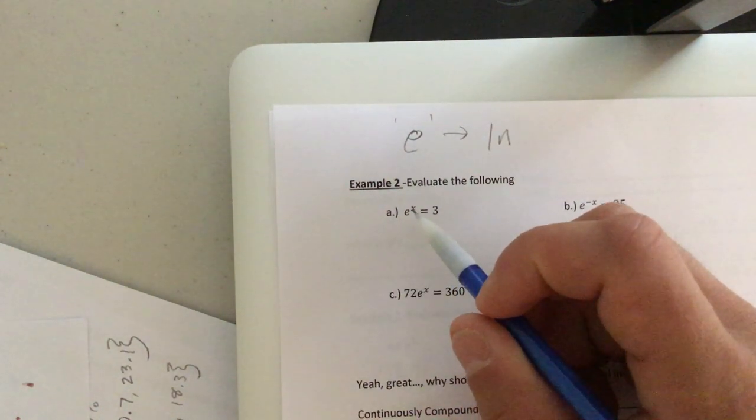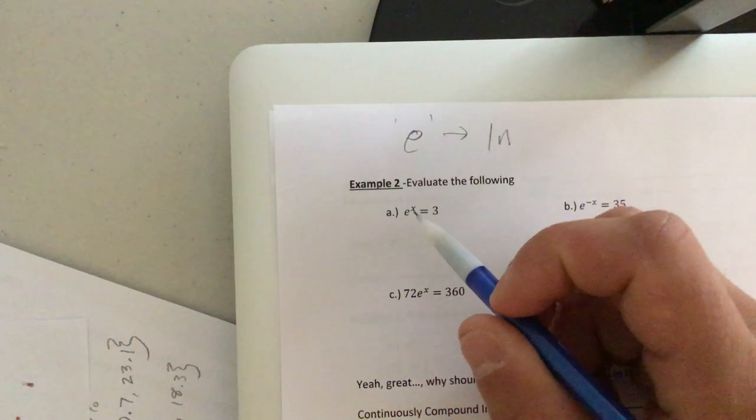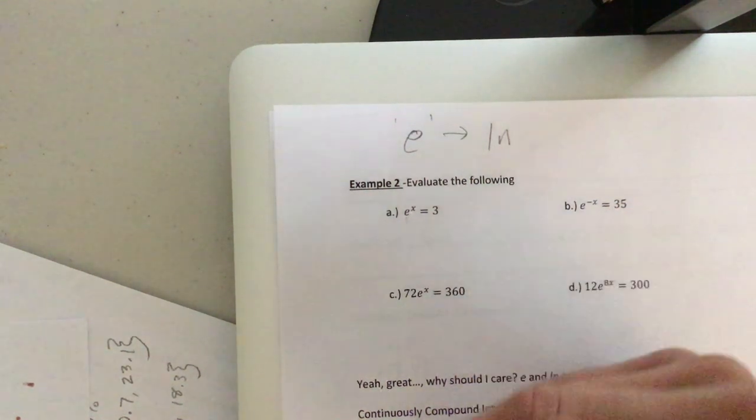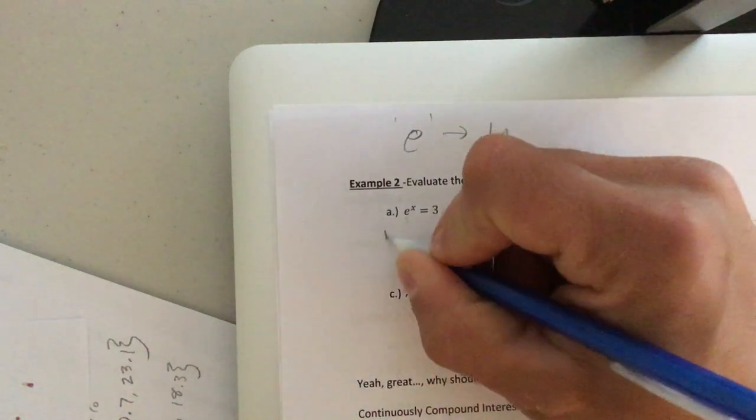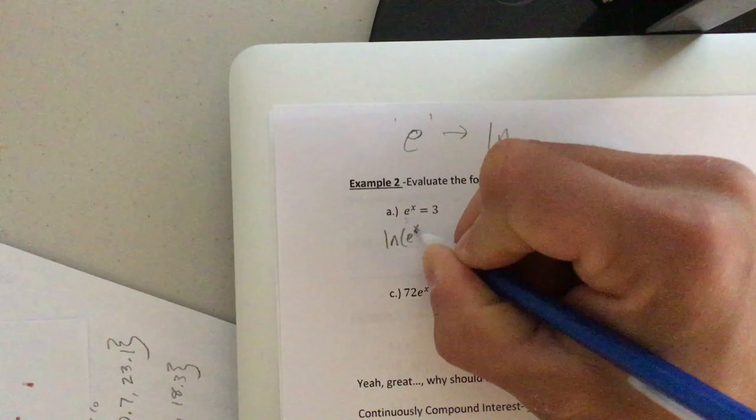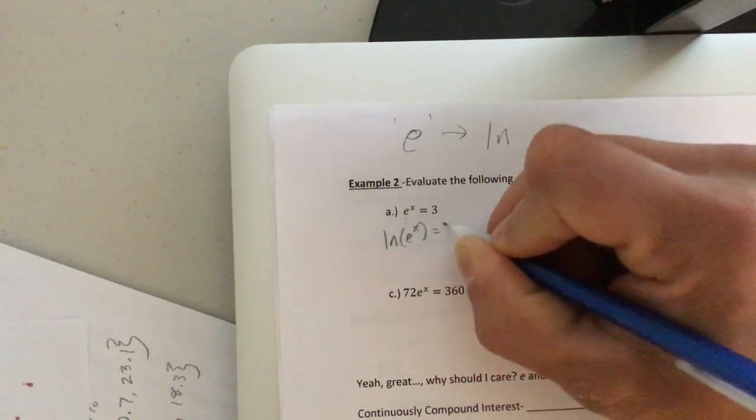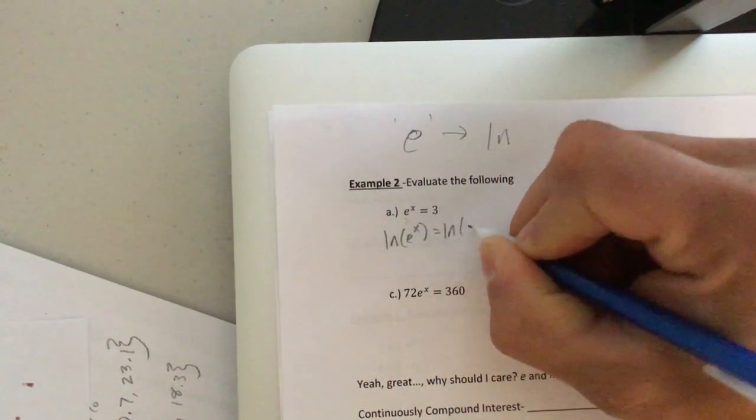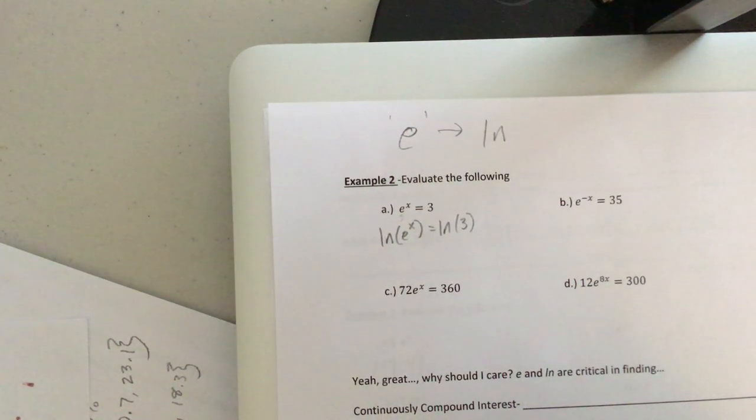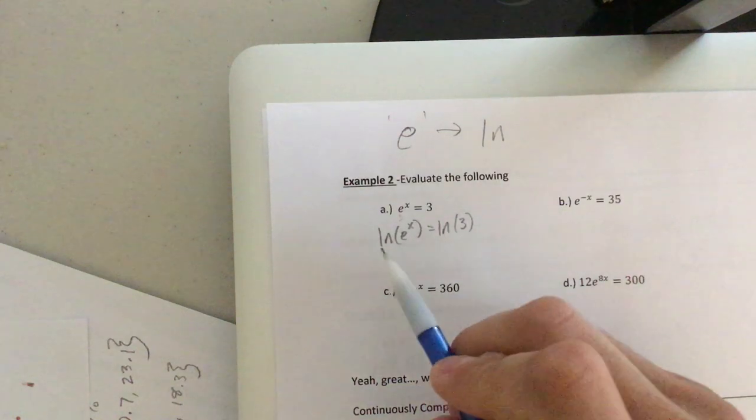Right now we have E to the power of X equals three. To cancel out the E, to eliminate it, we have to take the natural log of both sides. So I'll take the natural log of E to the X. I'll take the natural log of three. Okay. And this is some pre-calc concepts. So for a lot of us, this is going to be new.